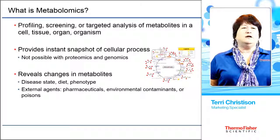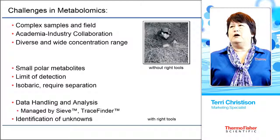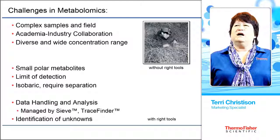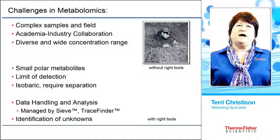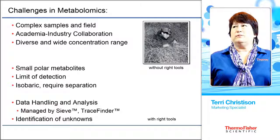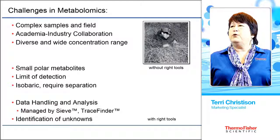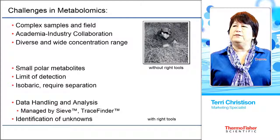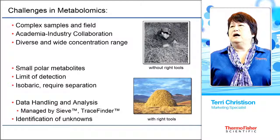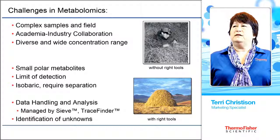Challenges in metabolomics are very large. We have complex samples, and the field itself is quite complex. It requires both biologists, chemists, spectroscopists, chromatographers, and statisticians, then it brings the information back to the biologist. Therefore, it often requires academia and industry collaboration. The analytes are very diverse with a very wide concentration range, making it challenging for analysts. Additionally, many of them are small polar metabolites which don't separate well with many traditional analysis methods. The limit of detection is very important, often requiring very low detection limits. And these are isobaric, requiring separation — meaning that with mass spec alone they cannot be identified, and we need a chromatography separation method on the front side.